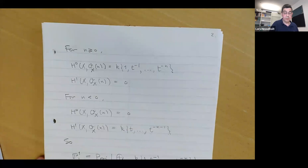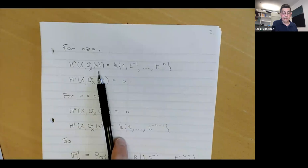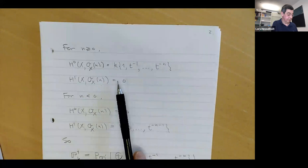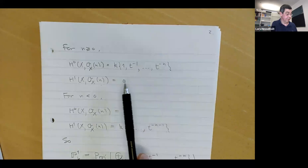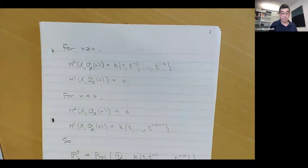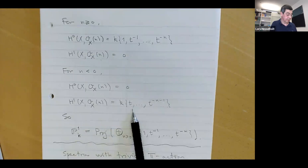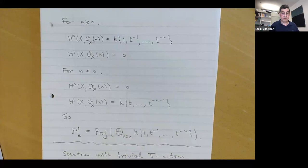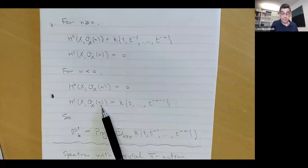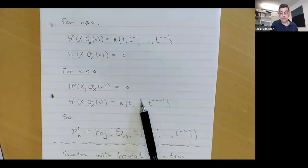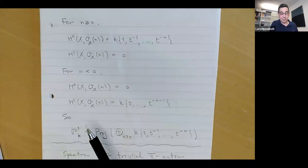If N is positive, then we have global sections: a K-vector space generated by 1, T-inverse, down to T to the minus N — think of these as meromorphic functions with a pole of depth N at infinity. There's no H1. If N is negative, then there are no global sections; instead there's an H1. Note that if N is minus one, this goes from T to one, which means zero, so both H0 and H1 are zero.